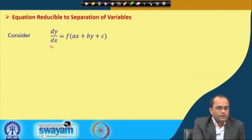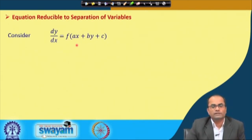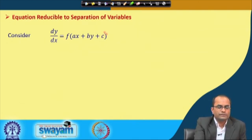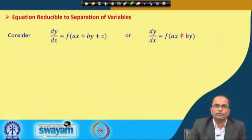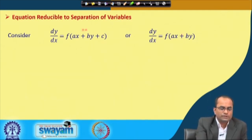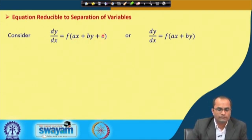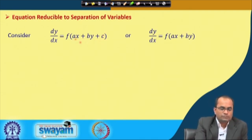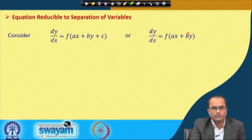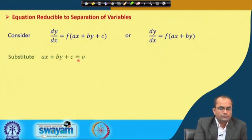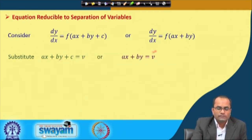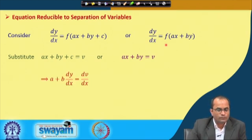For instance, consider dy/dx = f(ax + by + c). If the right hand side is a function of ax + by + c, or the simpler form ax + by, the given equation may not be in separable form. But if we make a substitution — setting v = ax + by + c (or v = ax + by in the simpler case) — we introduce a new variable v for this expression.